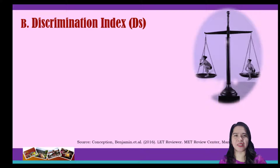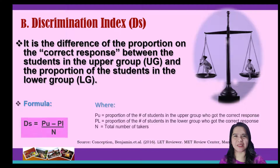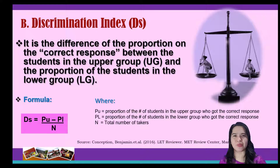Next, we have the discrimination index, denoted as DS. The discrimination index is the difference of the proportion between the students in the upper group who got the correct response and the proportion of the students in the lower group. When we say an item must discriminate, it simply means that a test can differentiate between low and high performing students. To solve for the discrimination index, we use the formula DS equals PU minus PL over N, where PU is the proportion of the number of students in the upper group who got the correct response, PL is the proportion of the number of students in the lower group who got the correct response, and N is the total number of takers.